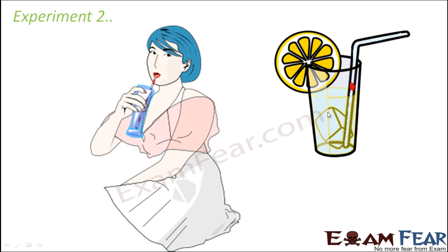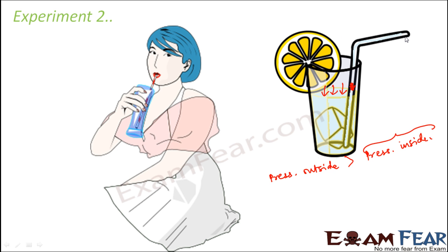Now the pressure outside the straw is more than the pressure inside the straw. Since the pressure is more outside, the air exerts pressure on the liquid and forces it to move up through the straw. It is the difference in pressure inside and outside the straw that forces the liquid to move up when the straw is being sucked. As long as the straw is not sucked, the liquid will not move. We have sucked the air from inside, so the air pressure inside reduced — that is how the pressure difference is created.